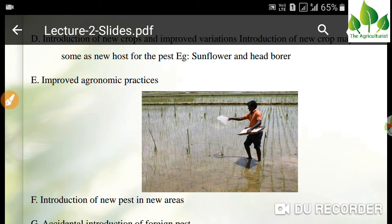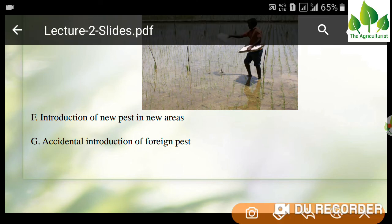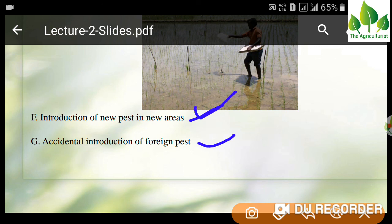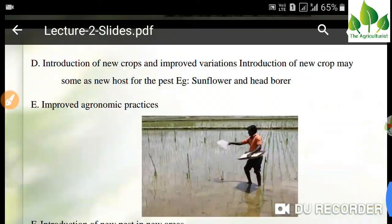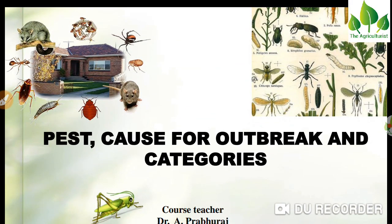Improved agronomical practices can also cause insect outbreaks. Another cause is the introduction of pests to new areas — if quarantine checkups are not done, insects from other countries can enter India and cause a pest outbreak. This also applies to domestic introduction of pests to new areas within India, like from Haryana to Rajasthan. That's all about pests and their outbreak. We will meet in the next video — till then, have a nice day, bye bye, and stay safe from COVID-19. Thank you.